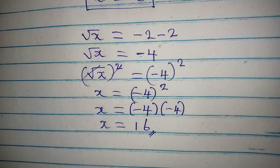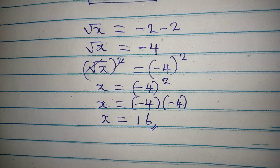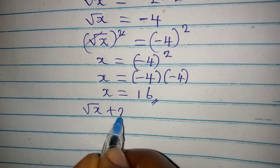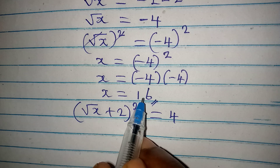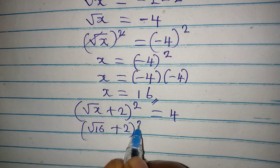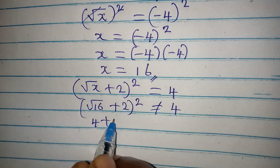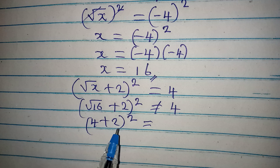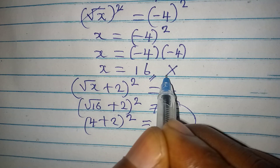Now let's verify by substituting x equals 16 into the original equation: square root of 16 plus 2, all squared. The square root of 16 is 4, so we get 4 plus 2 equals 6, and 6 squared is 36. That is not equal to 4, so x equals 16 does not satisfy the equation.